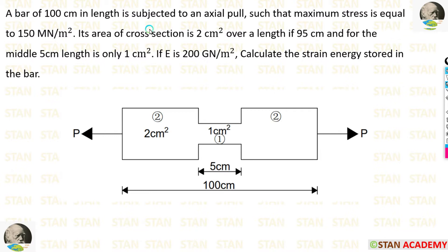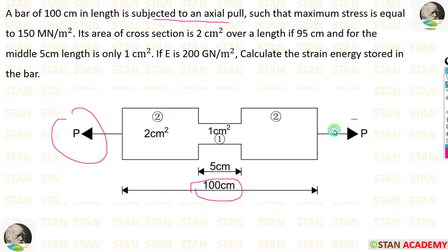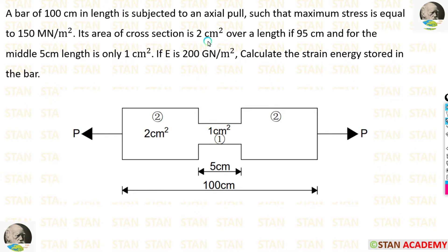A bar of 100 centimeter in length is subjected to an axial pull such that maximum stress is equal to 150 mega newton per meter square. The length of the bar is given as 100 centimeter, subjected to an axial pull on both sides. The maximum stress is given as 150 mega newton per meter square. For the 95 centimeter portion the area of cross section is 2 centimeter square, and for the middle 5 centimeter portion it is only 1 centimeter square.